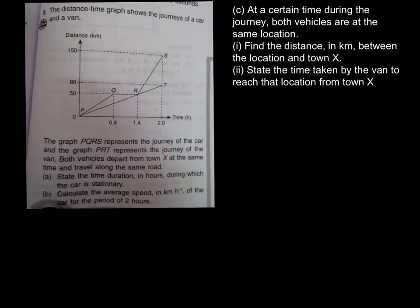Before we start, you have to understand this is called a Distance-Time Graph. The difference between a Distance-Time Graph and a Speed-Time Graph is: if this one is Distance, that means all these movements we call Distance. If this is a Speed graph and you want to find Distance, you have to find the area. The area of the Distance-Time Graph doesn't mean anything, but the area for the Speed-Time Graph means Distance.